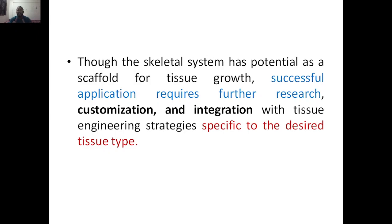Successful application of the skeletal system as a scaffold requires further research, customization, and integration with tissue engineering strategies specific to the desired tissue type. Research is needed to deliver the specific properties required by each patient, and integration of the skeletal system with tissue engineering strategies is very important to obtain the specific desired tissue type.